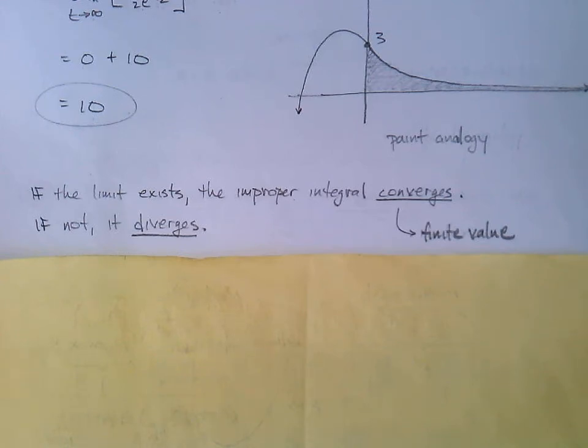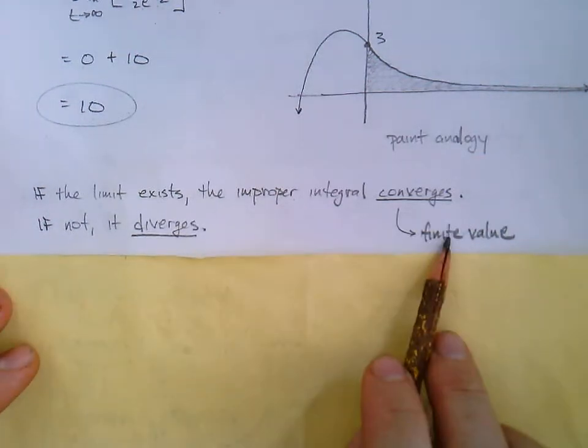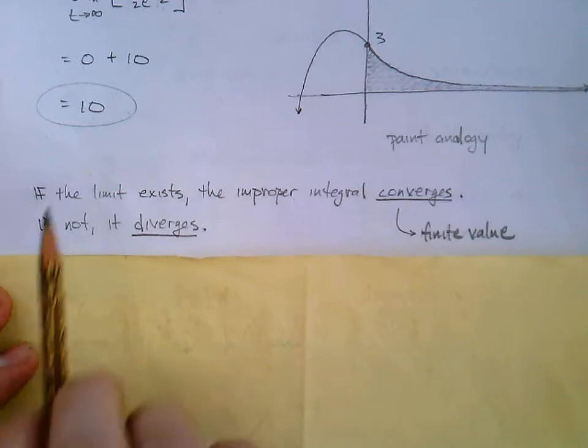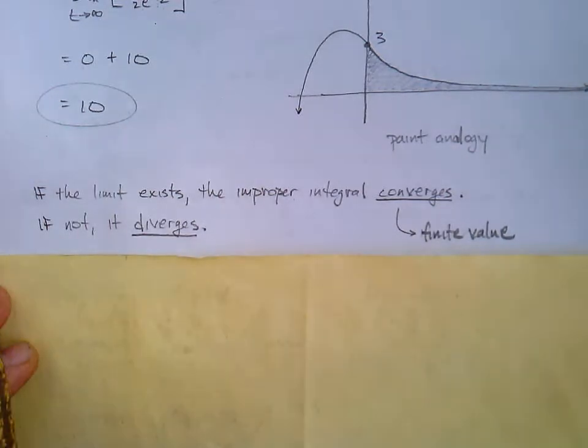So if a limit exists, that means if we get a number for an answer, like 10, then we say the improper integral converges. If we do not get a finite value, so if you get infinity, then we say that the integral diverges.